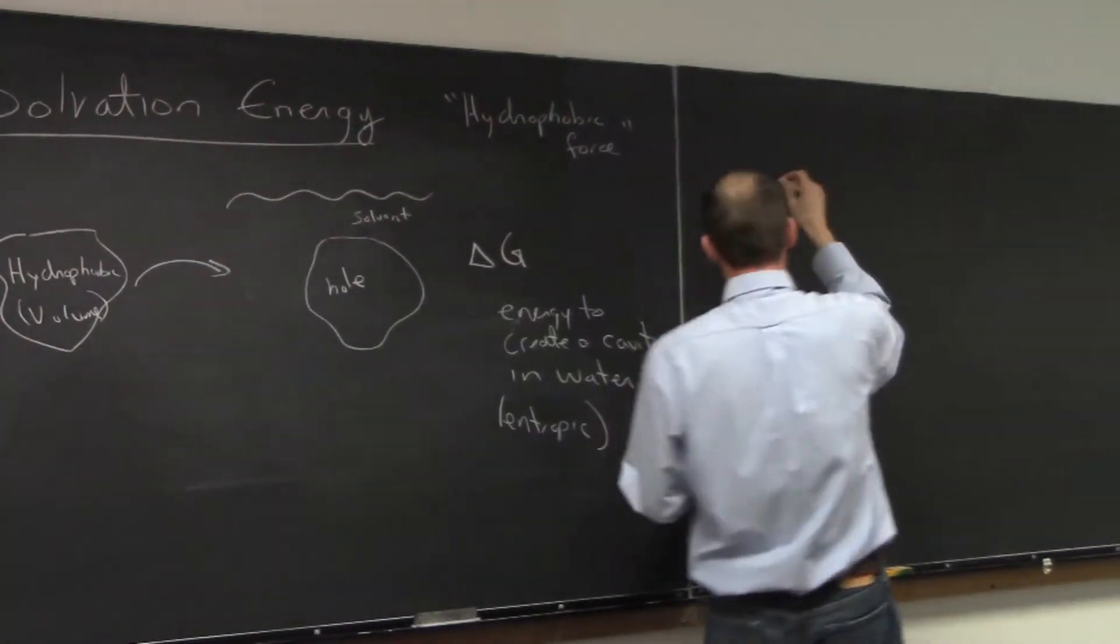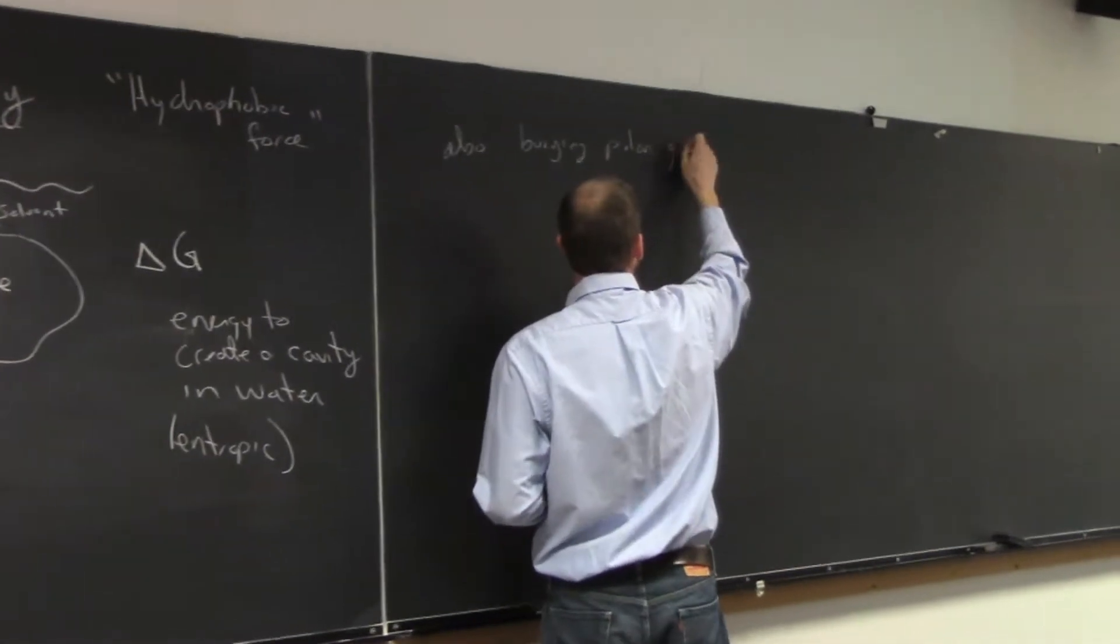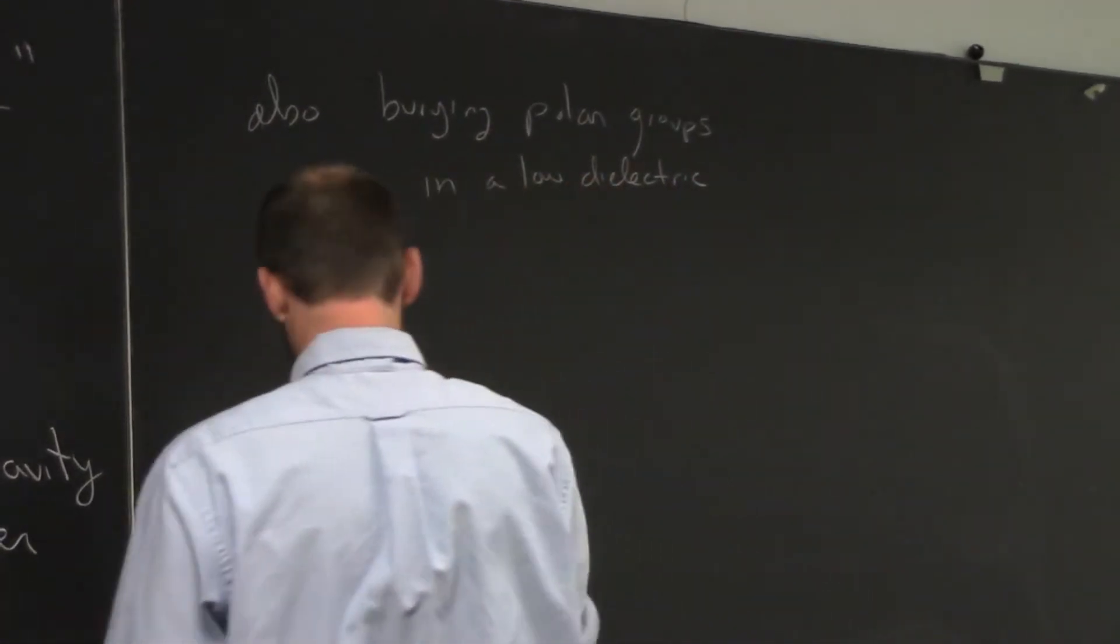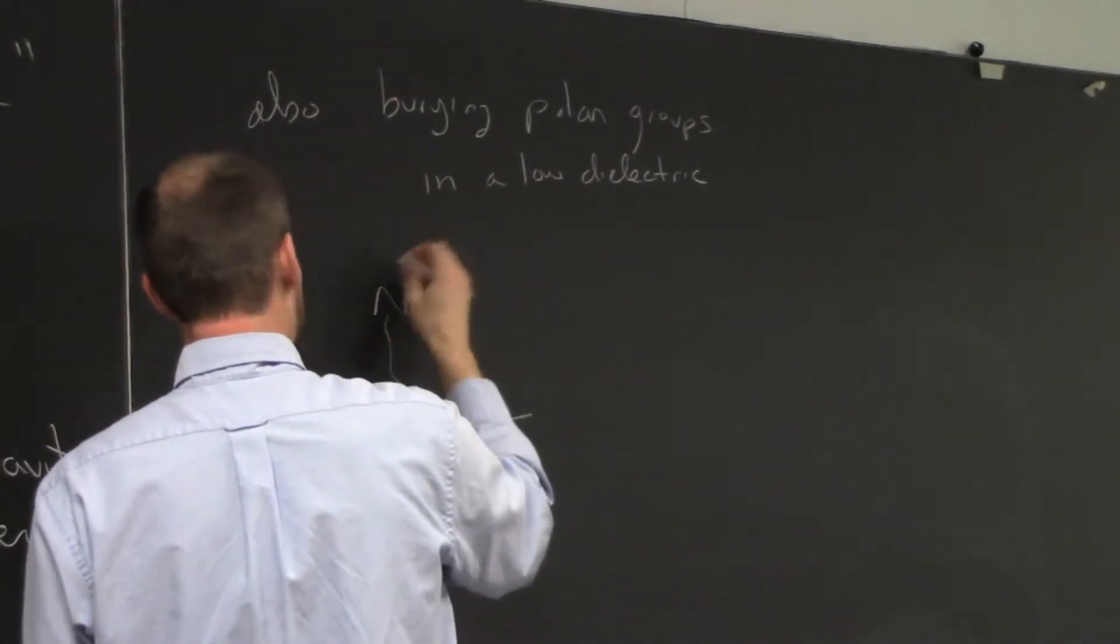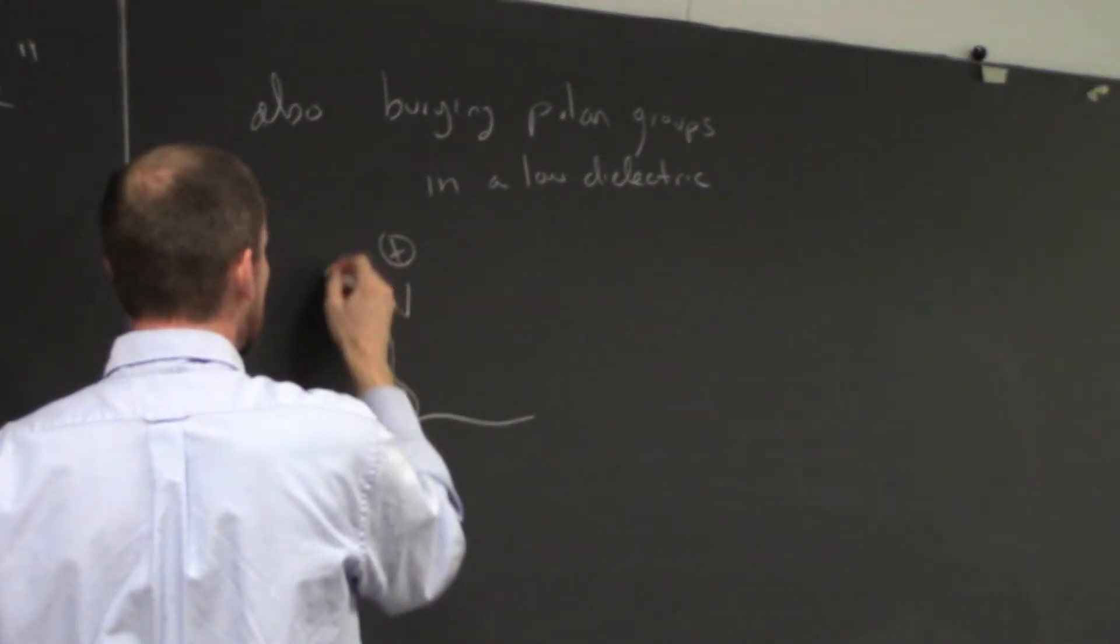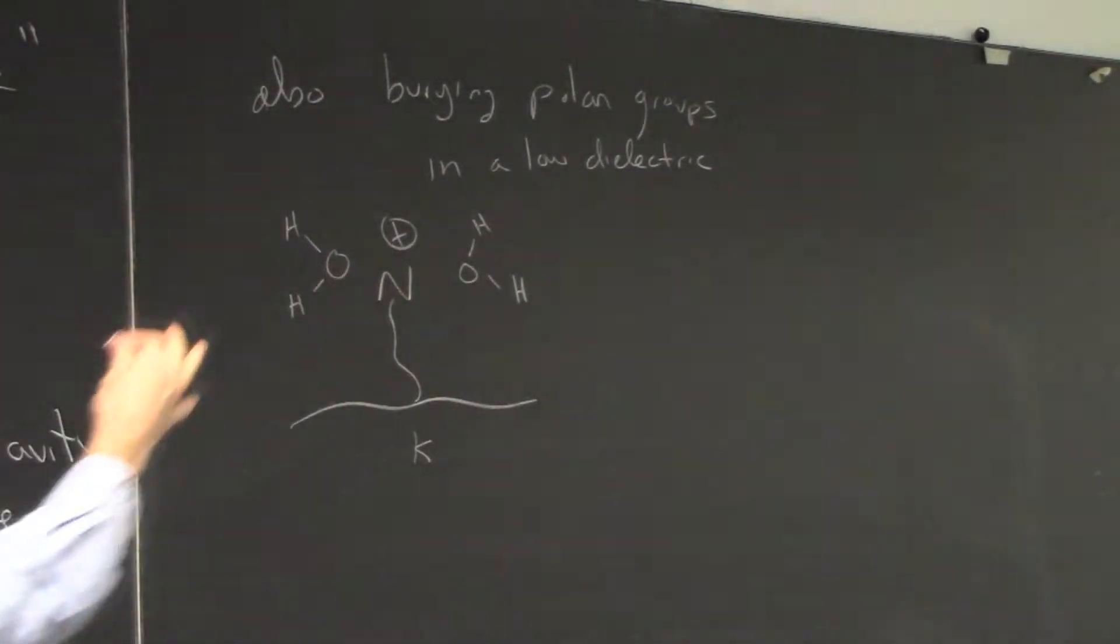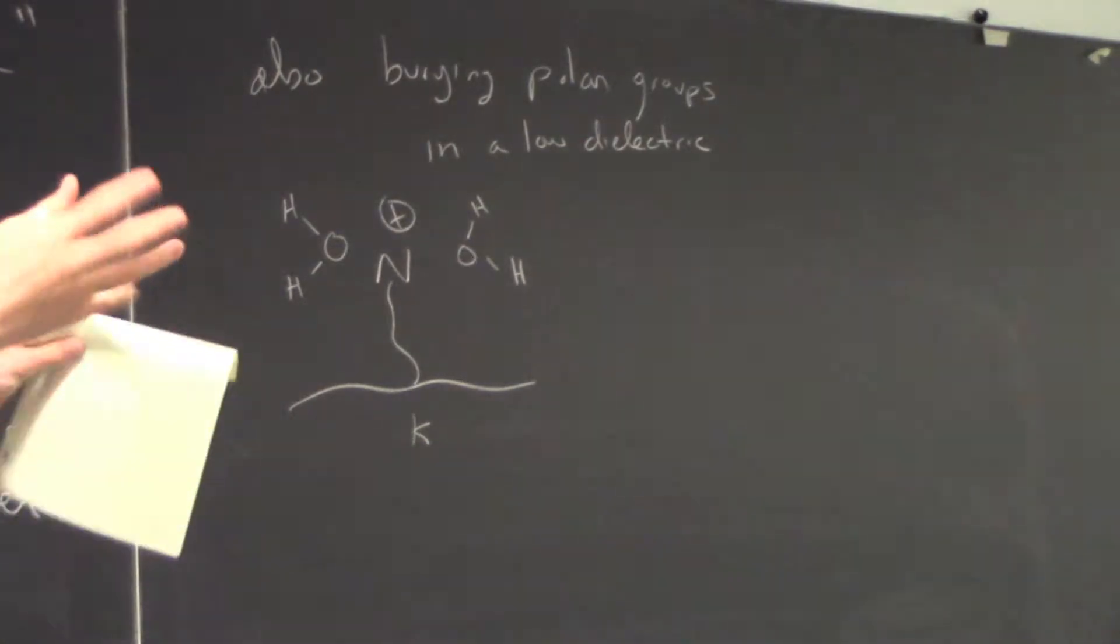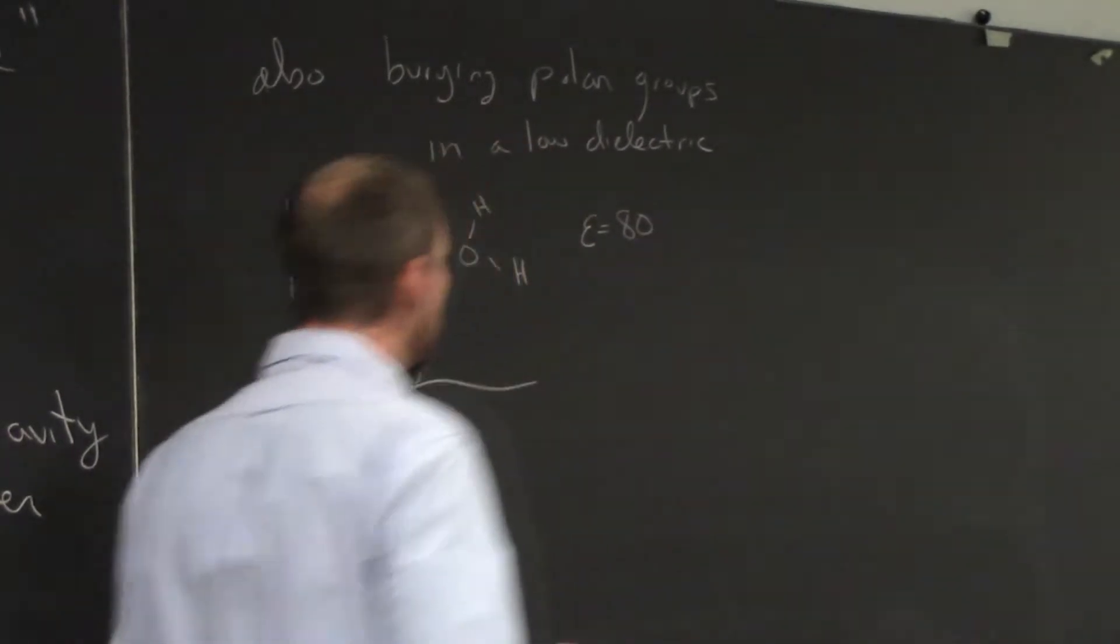So then we also have burying polar groups in a low dielectric. If we have a lysine that has a side chain that might be positively charged, if that's unfolded and there's waters around it, the water might arrange itself to compensate for that positive charge by putting the negative charge in the water molecule toward that side chain. So that might be favorable in solvents. These water molecules are very movable and so they move around with ease and the dielectric constant of water is 80.